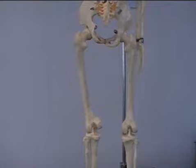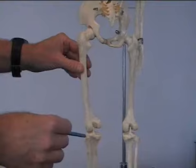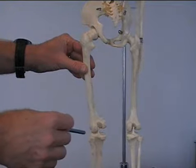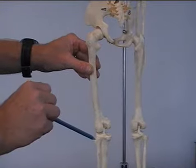Now they both insert into the head of the fibula and the lateral tibial condyle. So onto here and onto the head of the fibula.